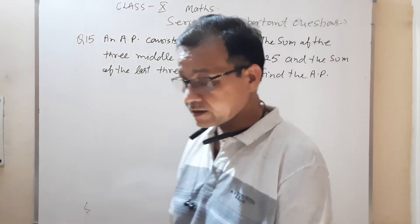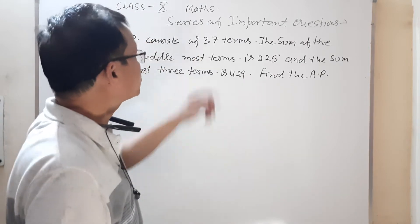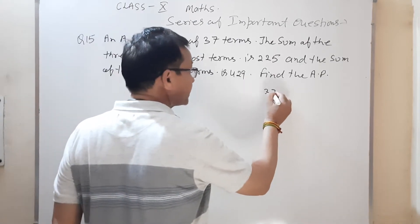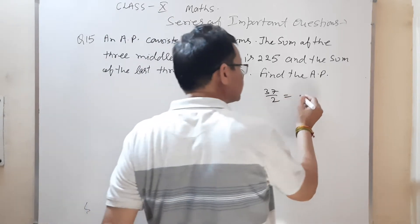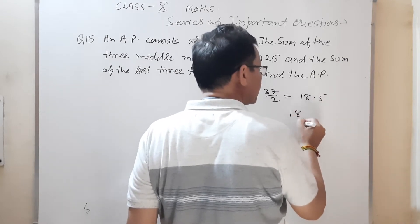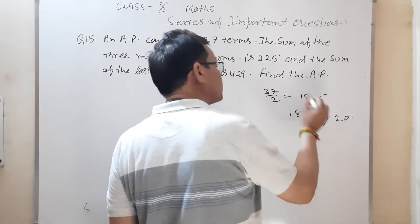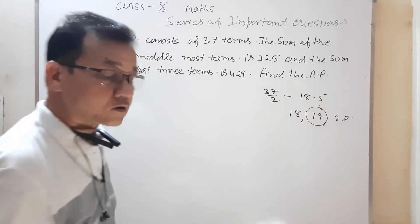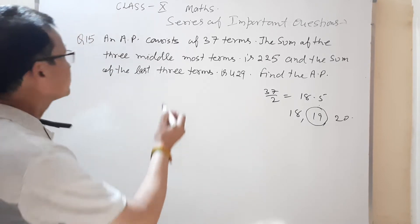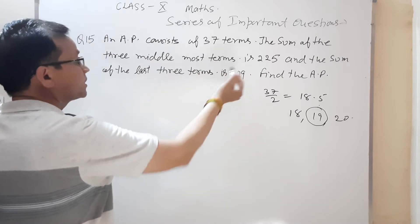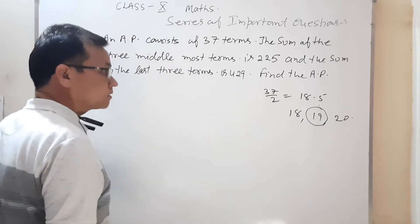AP find out करनी है जिसमें 37 terms हैं। 3 जो सबसे middlemost terms हैं, तो middlemost कैसे निकालोगे? 37 का half किया तो 18.5 आएगा। तो एक 18th term होगी, 19th term होगी और 20th — यही तीनों middlemost terms होंगी।